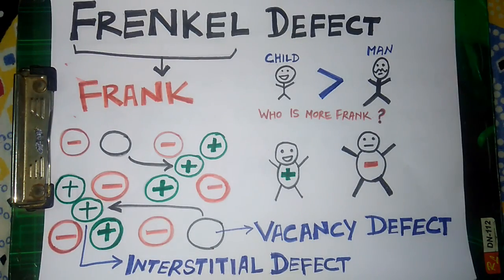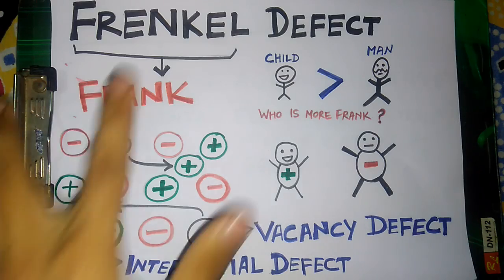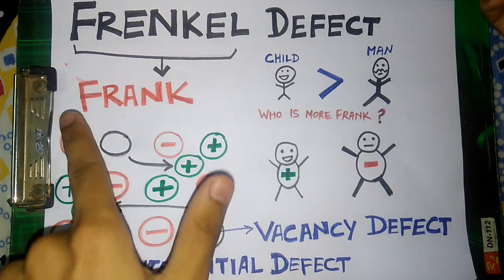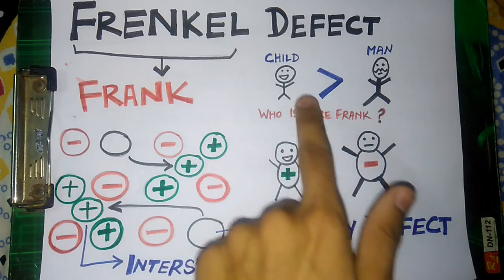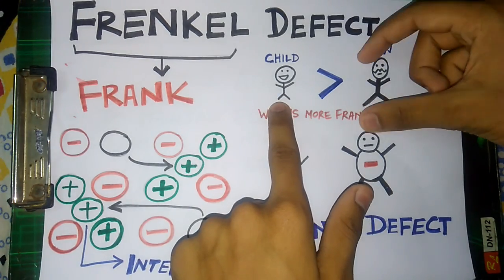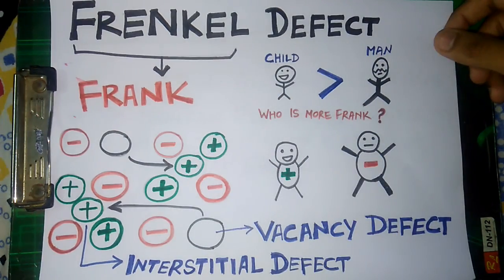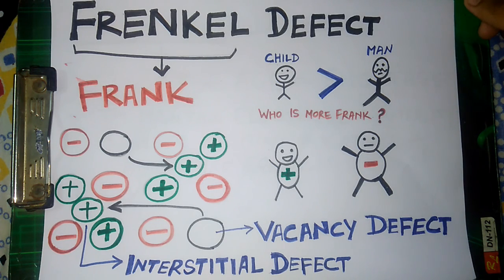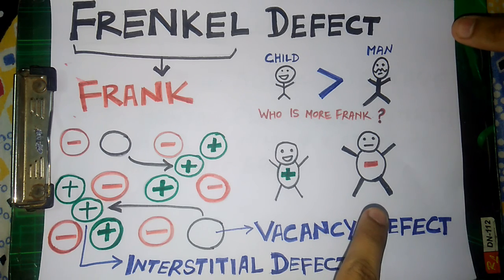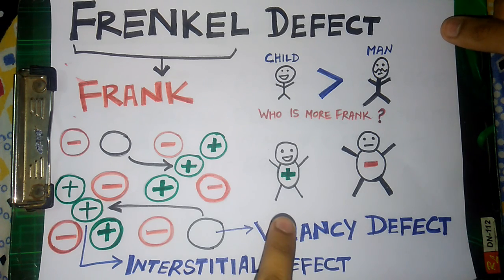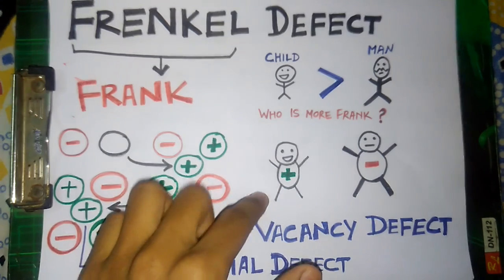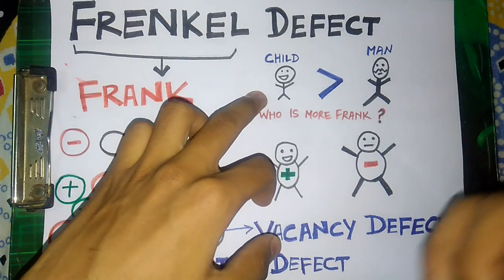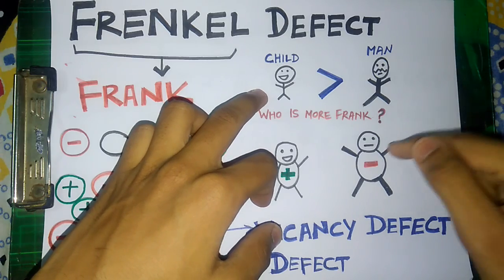First of all I would like to talk about Frenkel defect. What is the first word that you get out of Frenkel? It's Frank. And what do you think — out of a small child and a man, which one is more Frank? Obviously the child. And out of a cation and an anion, which one is bigger? Obviously the anion is bigger and the cation is smaller. So we will assume that a cation, like a small child, will be more Frank than an anion.